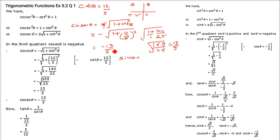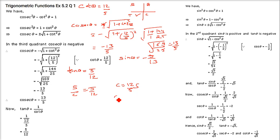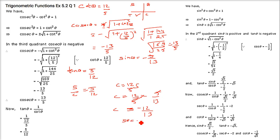Sin θ is the reciprocal of cosec θ, so sin θ = -5/13. Cot θ is 12/5, so tan θ = 5/12. Since tan θ = sin θ / cos θ, we get cos θ = (12/5) × sin θ = (12/5) × (-5/13) = -12/13. Therefore sec θ = -13/12. These are all the other trigonometric functions.